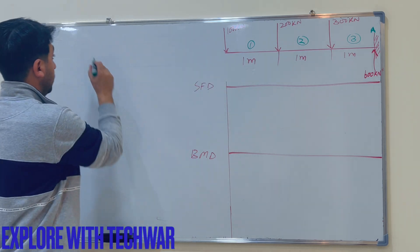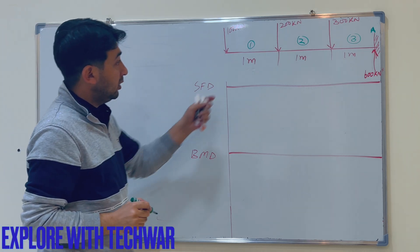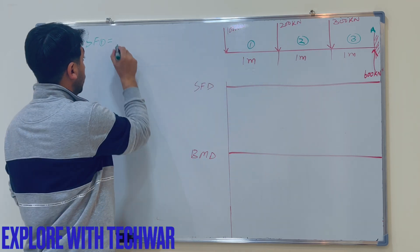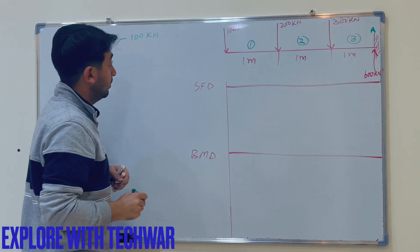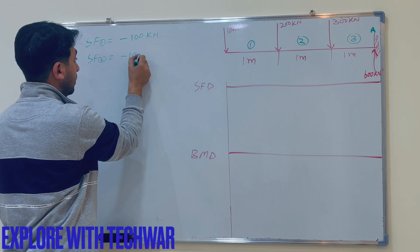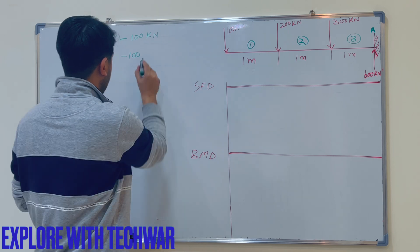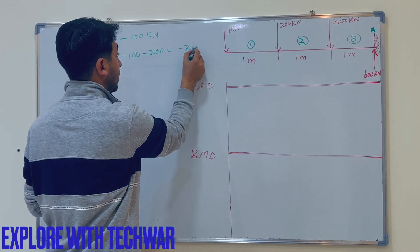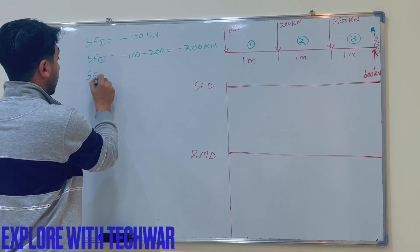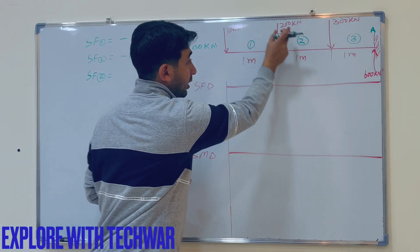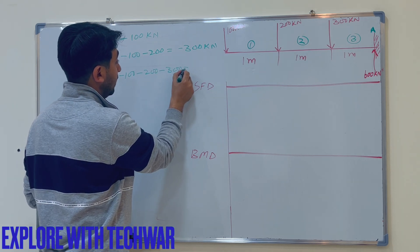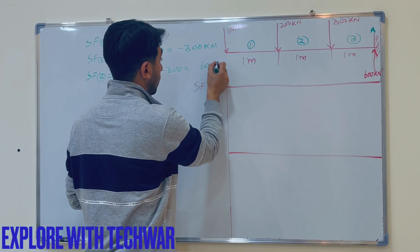Shear force at section 1: only 100 kilonewtons is acting on the left side, directed downward, so it is minus 100 kilonewtons. At section 2: minus 100 minus 200 equals minus 300 kilonewtons. At section 3: minus 100 minus 200 minus 300 equals minus 600 kilonewtons.